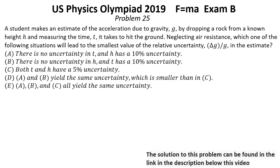Problem number 25. A student makes an estimate of the acceleration due to gravity g by dropping a rope from a known height h and measuring the time t it takes to hit the ground. Neglecting air resistance, which one of the following situations will lead to the smallest value of the relative uncertainty dg over g in the estimate.